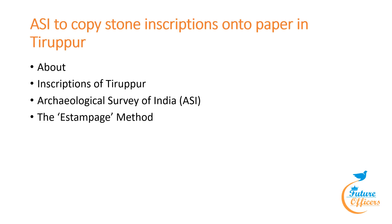Our first topic is ASI copying stone inscriptions onto paper. A team from the Archaeological Survey of India recently copied important inscriptions at Talishwara Temple, Kovalai Palayam, using the estampage method. Eight inscriptions dating from the 9th to 12th centuries were recorded, and the findings including hero stones and sculptures will be studied and reported.